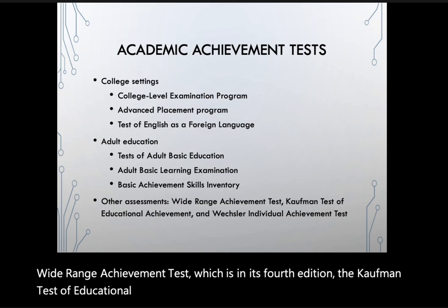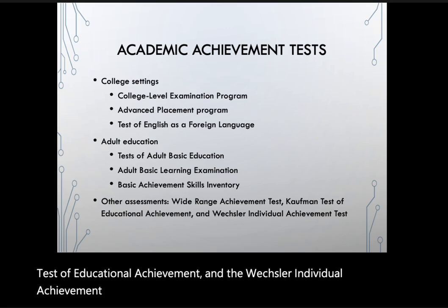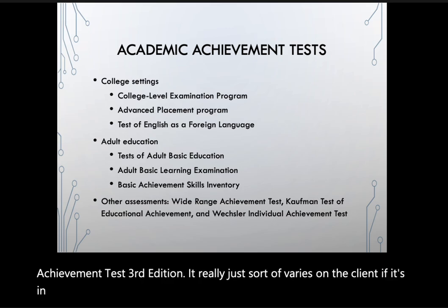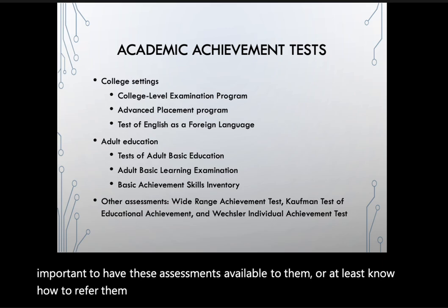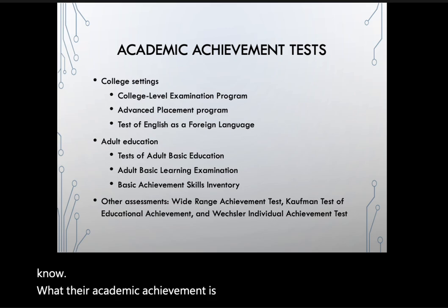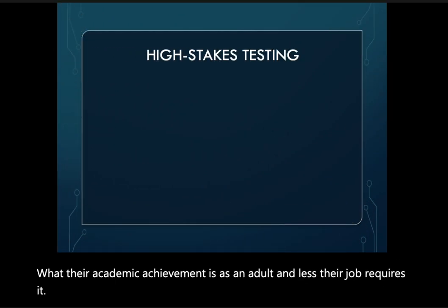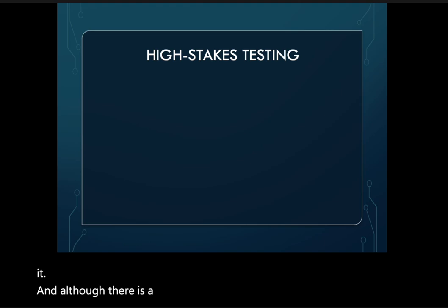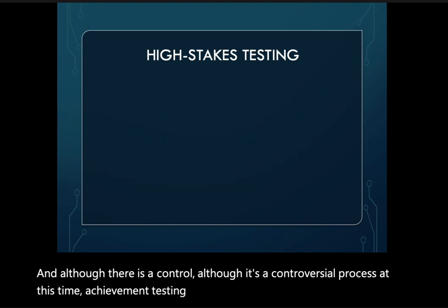There are also individual achievement tests that can be used across the lifespan to assess reading, mathematics, and language skills. These include the Wide Range Achievement Test fourth edition (WRAT-4), the Kaufman Test of Educational Achievement, and the Wechsler Individual Achievement Test third edition (WIAT-III). Whether these assessments are needed varies by client, since not everyone requires knowledge of their academic achievement as an adult unless their job requires it.